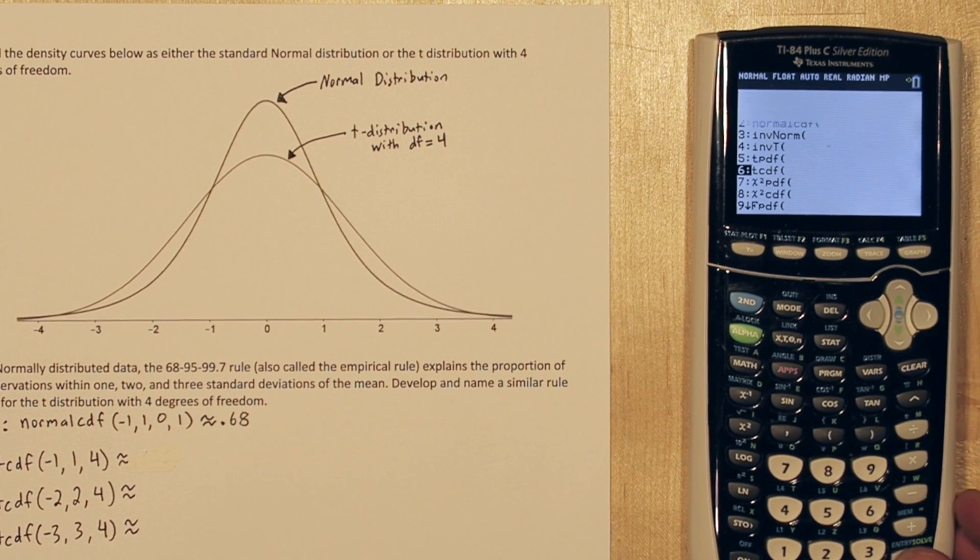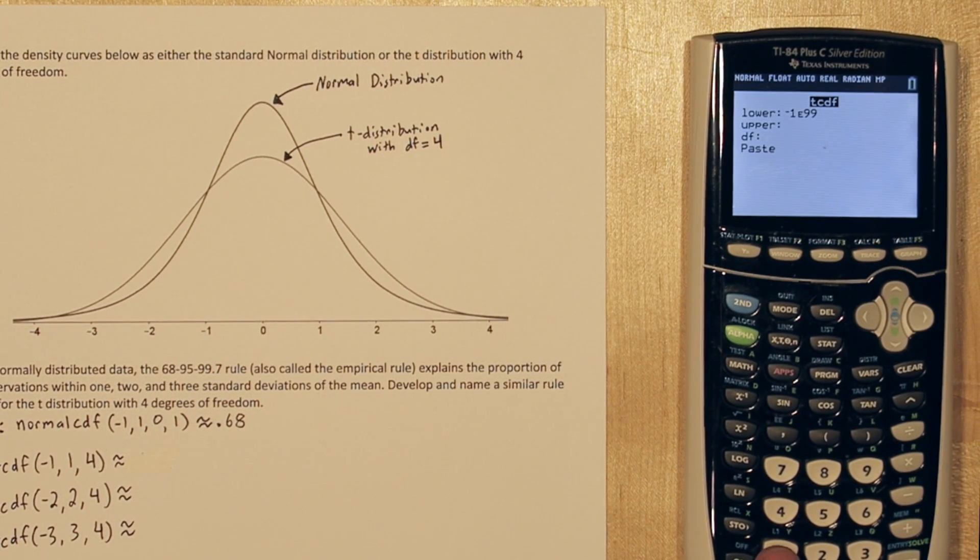When using tcdf, you have to input your lower and upper bound, just like normal CDF, but you also have to tell it degrees of freedom. And that returns 0.626.